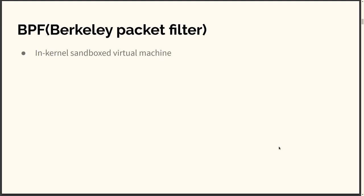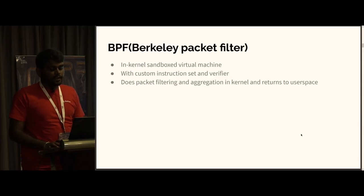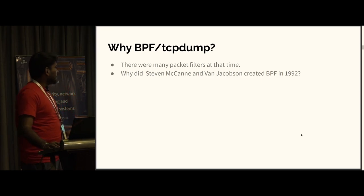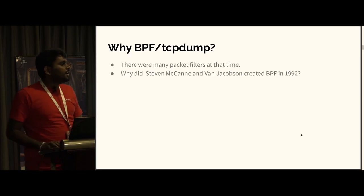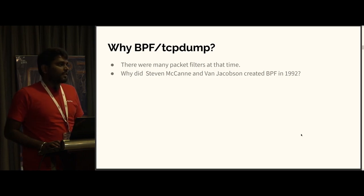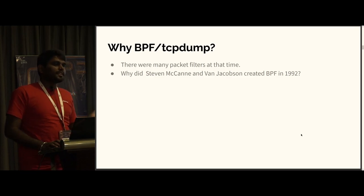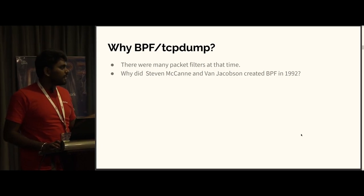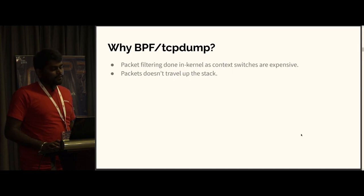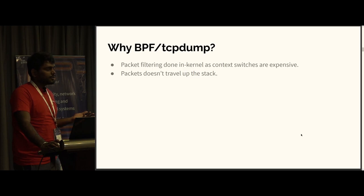What BPF is, is a virtual machine running inside the kernel with its own custom instruction set. That means it cannot run an entire operating system, but it does a specific thing — packet filtering and aggregation — and returns to user space. At that time lots of packet filters were there. Why did Van Jacobson and Steve McCanne create BPF? Van Jacobson is synonymous with saving the internet in the 1990s for his congestion control algorithms. Running inside the kernel, it avoided context switches and processing overhead.